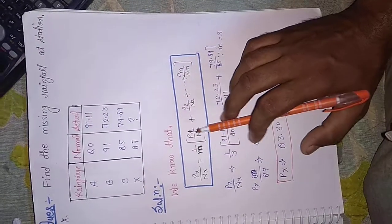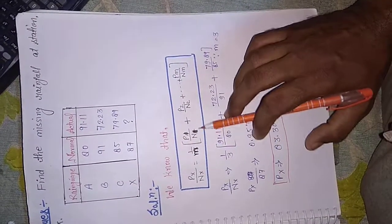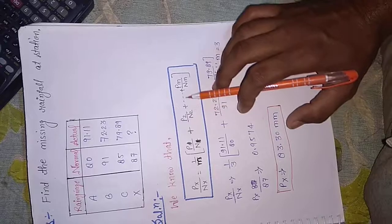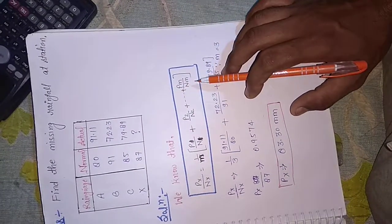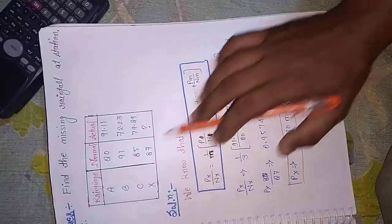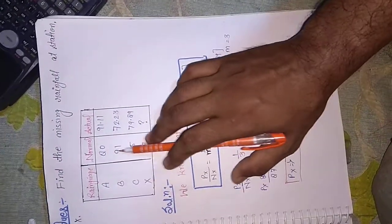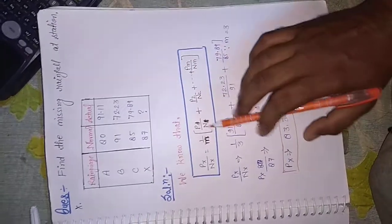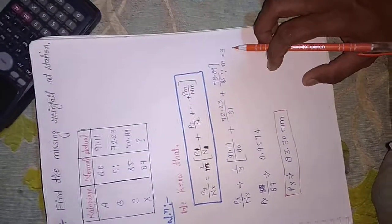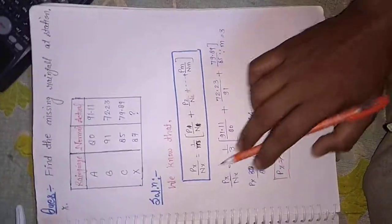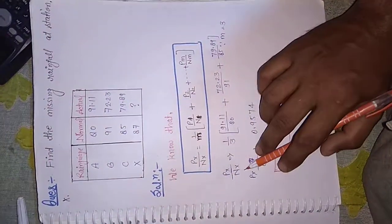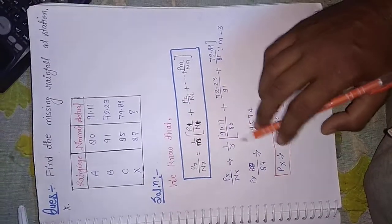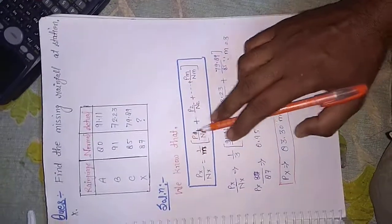एक formula होता है: Px by Nx is equal to 1 upon m times (P1/N1 + P2/N2 + ... + Pm/Nm). यहाँ पर stations 1, 2, 3 हैं, तो m is equal to 3 रखेंगे। तो Px/Nx = 1/3 हो गया।